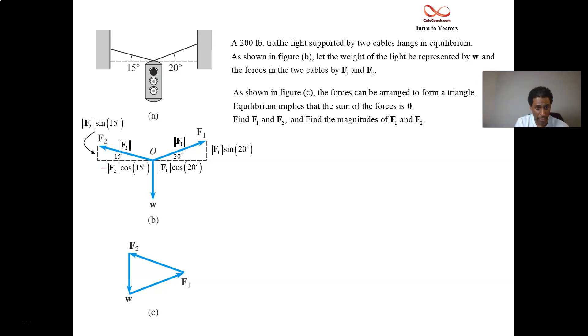F1 as a vector is equal to the I component, which is mag F1 cosine of 20, and the J component, which is mag F1 sine of 20. Then we have F2 as a vector. Its I component is negative mag F2 cosine of 15, and its J component is mag F2 sine of 15.